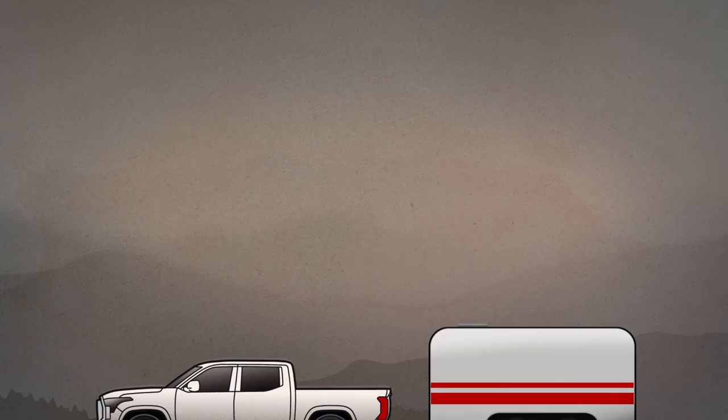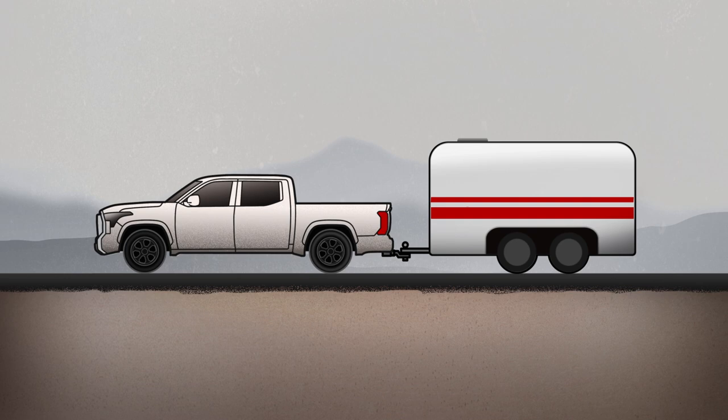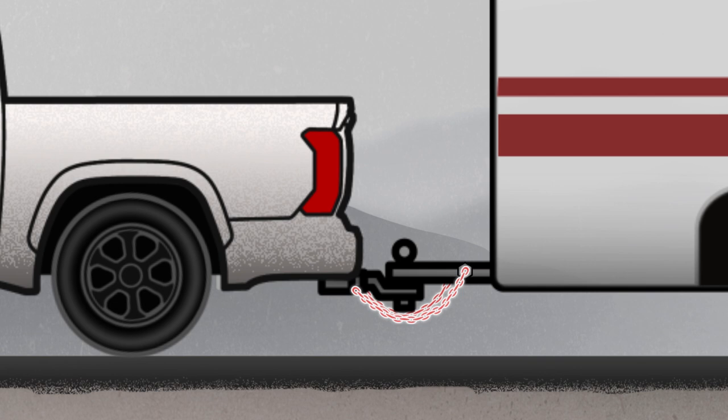When the time comes to hook the trailer up to the vehicle, ensure that both the proper mechanical and electrical connections are made. This means confirming the ball hitch is the correct size for the trailer before attaching it to the vehicle. Once coupled, it's also important to hook up and cross the trailer safety chains, then hook up the electrical connector and emergency brake cable.